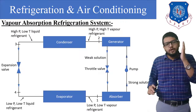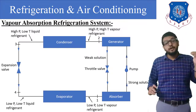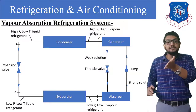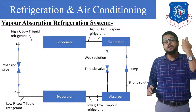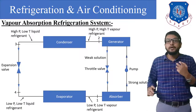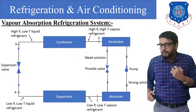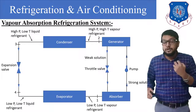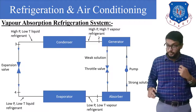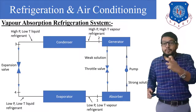Starting from point number four: low pressure, low temperature liquid refrigerant enters the evaporator, absorbs heat energy from the freezing compartment, gets vaporized, and at the exit of the evaporator — point number one — we have low pressure, low temperature vapor refrigerant. This vapor refrigerant enters the absorber, where it is absorbed by the cold water, forming a strong solution of ammonia in which the ammonia content is much higher. That strong solution is then sucked by the pump.